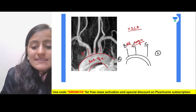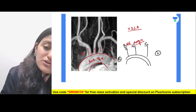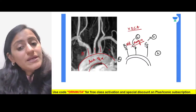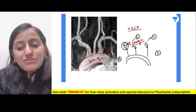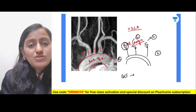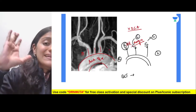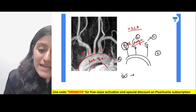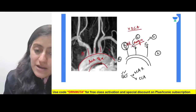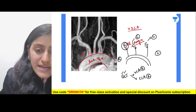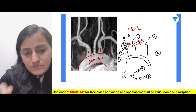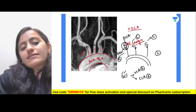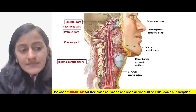Remember the mnemonic BCS — Brachiocephalic trunk, left Common carotid artery, and left Subclavian artery. Not the right common carotid or right subclavian, because those come from the brachiocephalic trunk. The brachiocephalic trunk gives the right subclavian artery and the right common carotid artery. From right to left: brachiocephalic trunk, left common carotid, left subclavian.